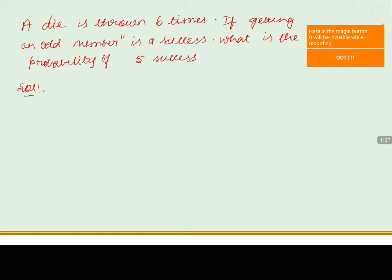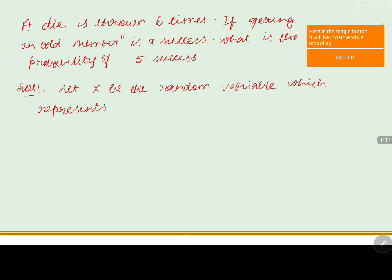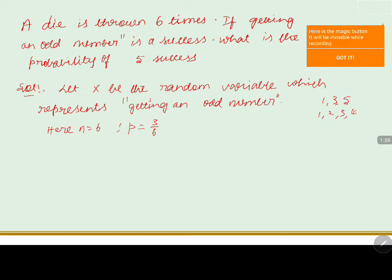First, let x be the random variable which represents getting an odd number. Here the value of n is equals to six, while the value of p is equals to three by six, because the odd numbers are one, three, and five among one, two, three, four, five, six. So the value of p equals three by six.